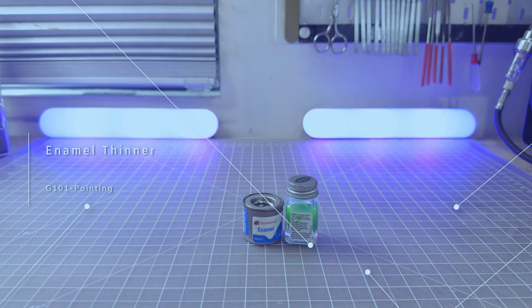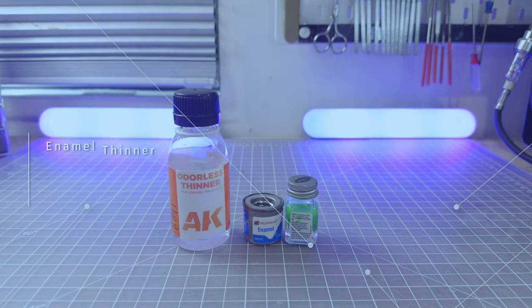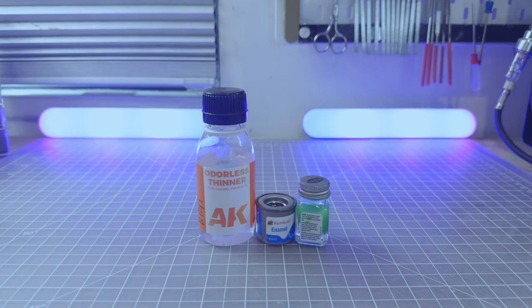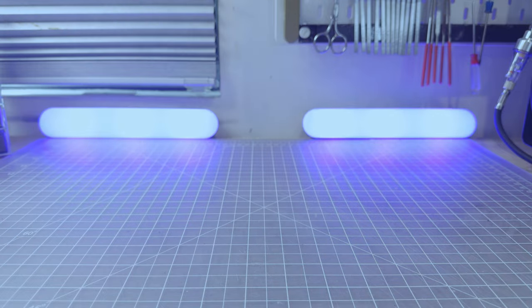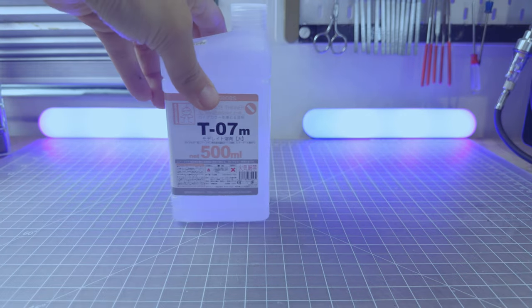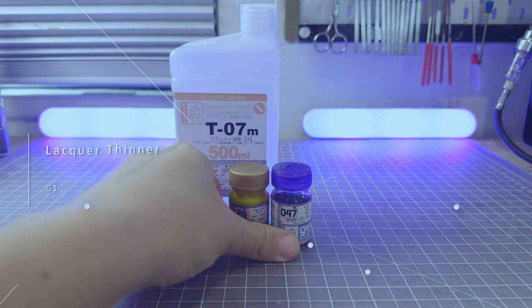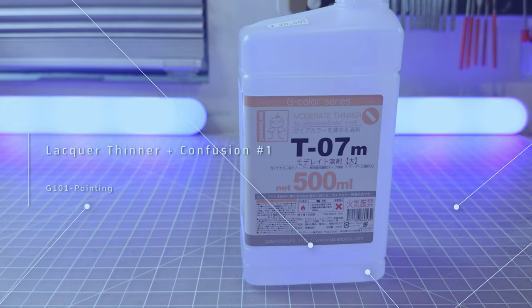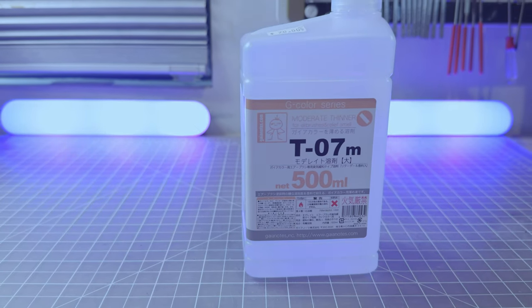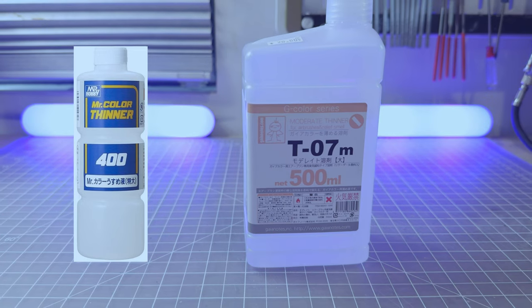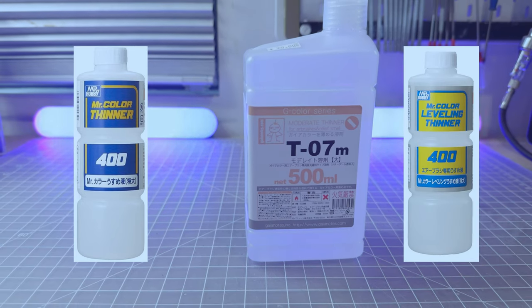When it's enamel, it should be used with enamel thinner. Simple, but so many choices, right? When it's lacquer, they should be thinned with lacquer thinner.